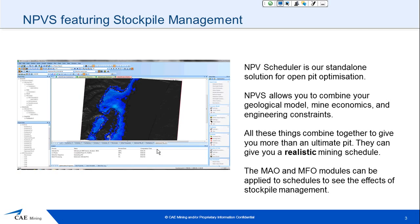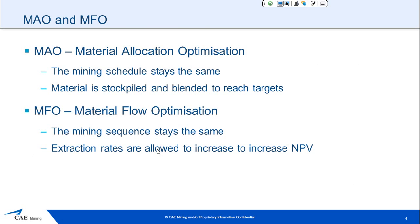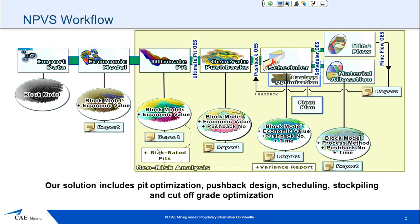The MAO and the MFO modules for the software are what allow you to see the effects of stockpile management. MAO is the Material Allocation Optimisation. What it does is the mining schedule in the pit stays the same, but the destinations are changed so material can be stockpiled and blended to reach the targets. Material Flow Optimisation, or MFO, has all the features of MAO, and the mining sequence will stay the same in the order blocks are extracted, but the extraction rates can be allowed to increase to increase the net present value. This is a brief overview of what NPVS does.